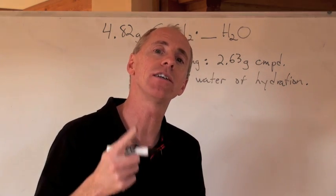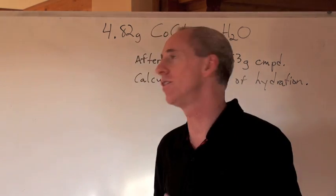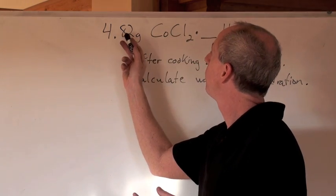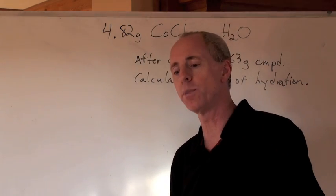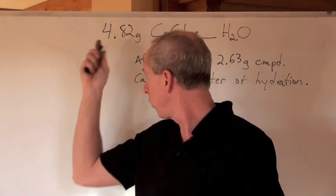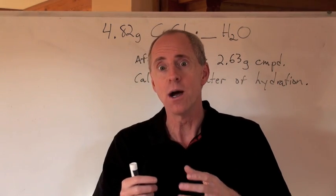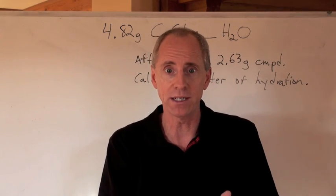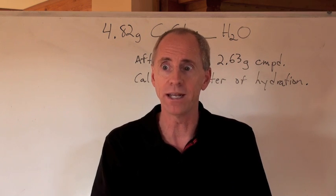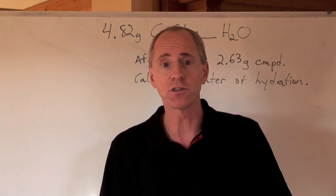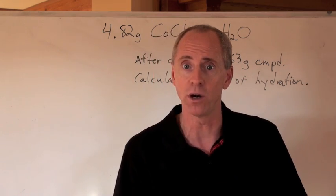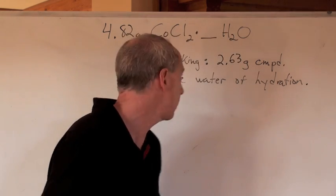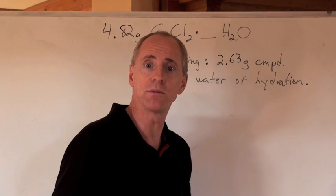Can you calculate that number given this information? I've got 4.82 grams of that compound originally. I take that mass of that sample, put it into an evaporating dish, put it onto a hot plate and cook it up. After a certain amount of time I weigh and then re-weigh the chemical until the mass doesn't change anymore and I get a new mass after cooking it of 2.63 grams.